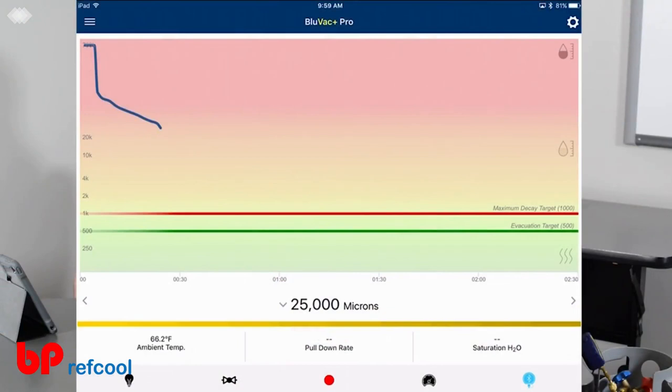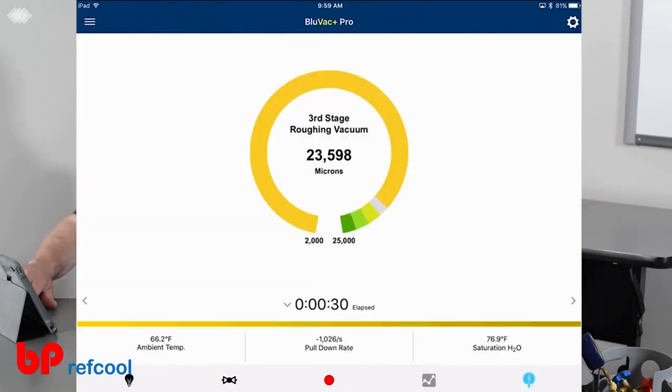So we're pulling down right now. You can see that's coming down pretty quickly. If we go to our progress indicator here, you can see we're in our third stage of roughing vacuum. This is just stripping down and going around.